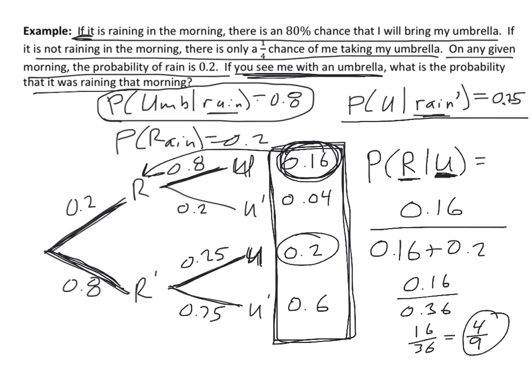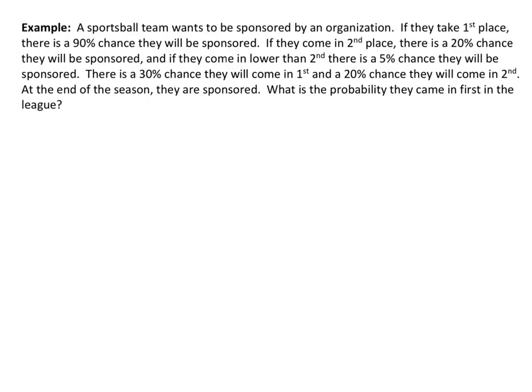That's Bayes' Theorem. This is what we would get if you followed that intimidating formula from one of the first slides, but we used the tree diagram to get the same result. In the next example, I want to show you that Bayes' Theorem and tree diagrams can also be used for more than two events. If you feel confident, give it a shot on your own — otherwise, walk with me through the tree diagram.